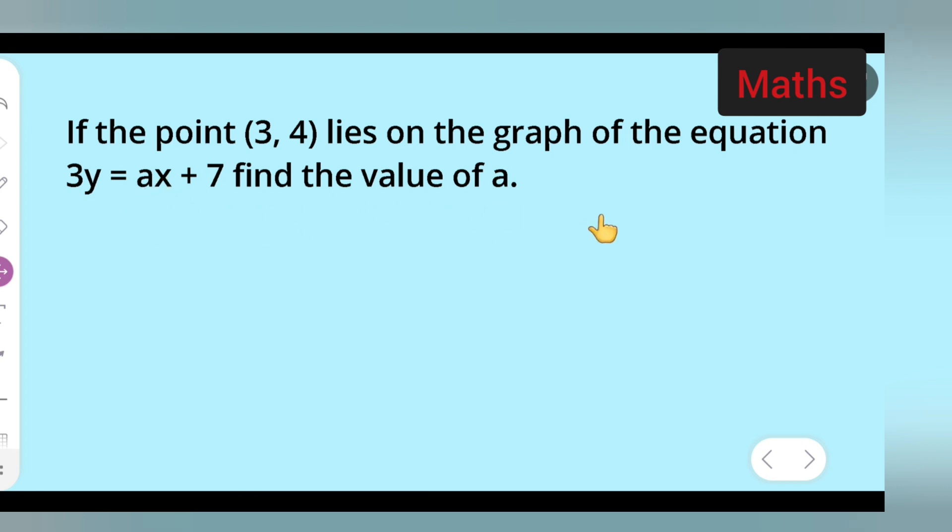How to deal with this? First write down 3y equals ax plus 7. Now in place of x, 3 is given, and in place of y, 4. So here it is your x and this is your y. Basically this is your x and this is your y.